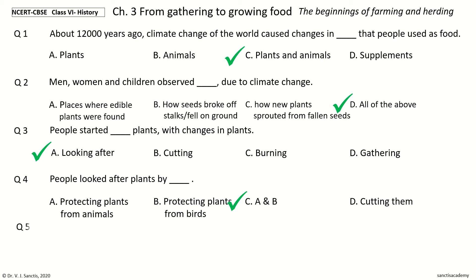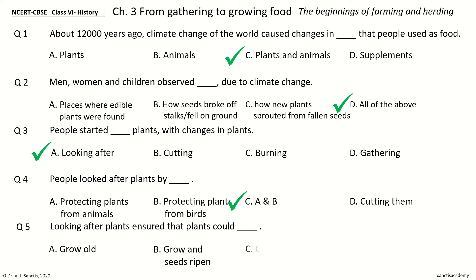Question 5. Looking after plants ensured that plants could do what. The options are: grow old; grow and seeds ripen; grow healthy; grow tall. And the answer is grow and seeds ripen.